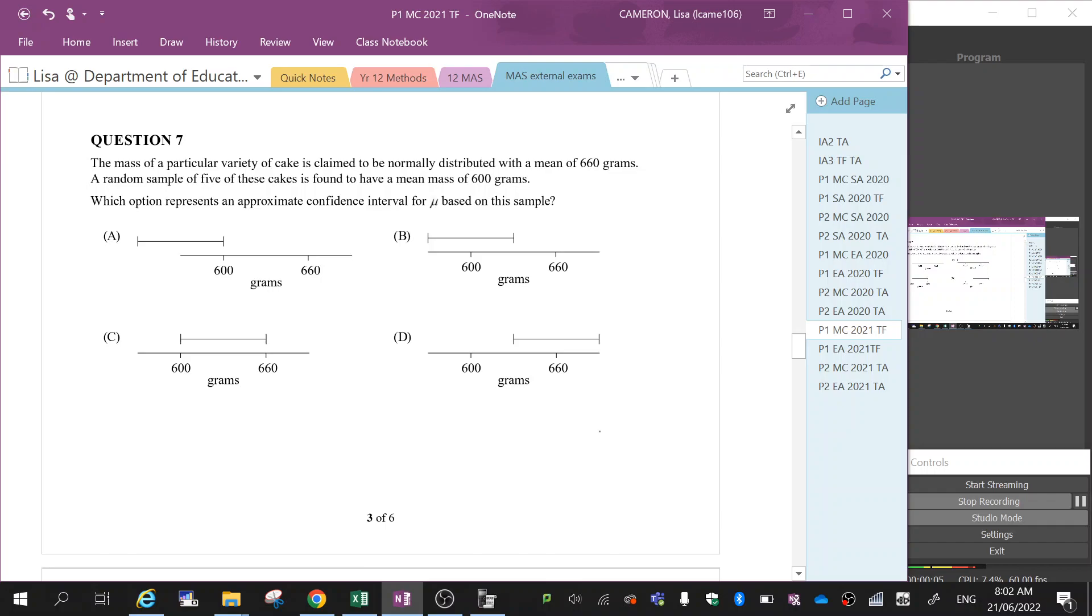The mass of a particular variety of cake is claimed to be normally distributed with a mean mass - that is a population mean of 660. A random sample of five cakes, n equals five, is found to have a mean mass of 600 grams. Which option represents an approximate confidence interval for the mean based on this sample?